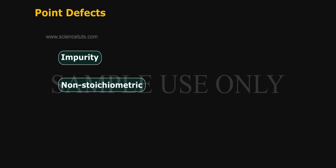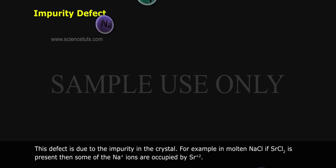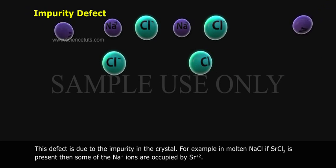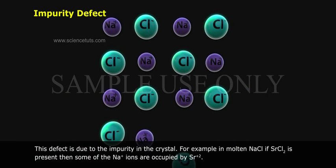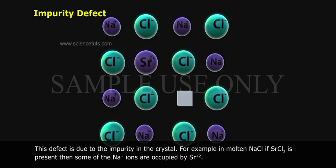Point defects are of three kinds: impurity, non-stoichiometric, and stoichiometric defects. The impurity defect is due to the presence of impurity in the crystal. For example, in molten NaCl, if SrCl₂ is present, then some of the Na⁺ ions are replaced by Sr²⁺.